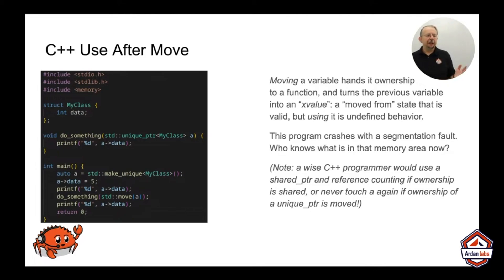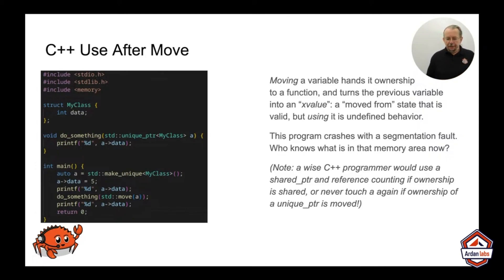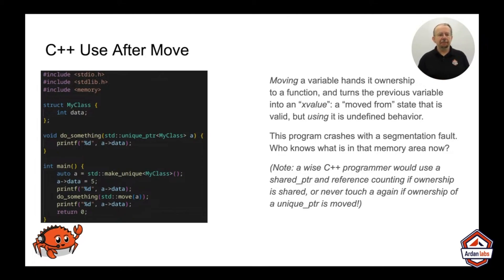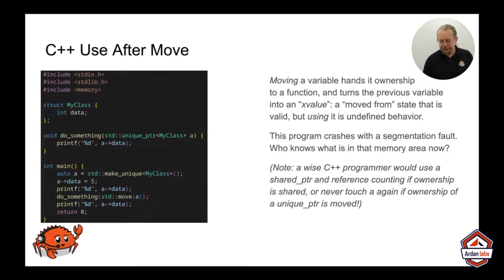So what happens when we do a print of that data? The answer is undefined behavior — we honestly don't know what it's going to do. When I ran this on my computer, it gave me a segfault. When I ran this on a different computer belonging to my wife, it printed five. It's not defined. You don't know — you can't rely on it.